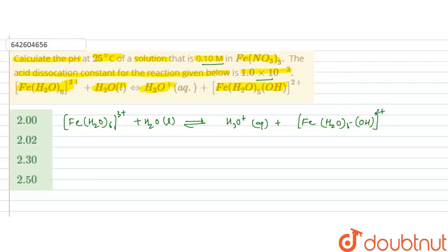Now, if we say at time T equals 0, if its concentration is C, this is present in excess because it is a solvent, liquid solvent, so we will not consider the concentration of water and let's see at time T equals 0, they will be nil and at equilibrium, if it dissociates by alpha amount, so its concentration will decrease by C alpha, it will form in C alpha and this will also form in C alpha amount.